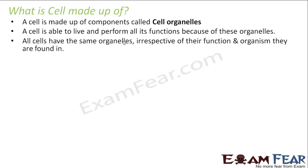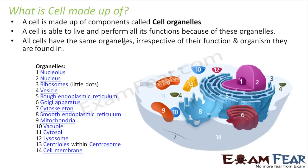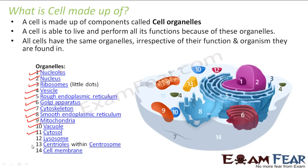In this lesson we will study in detail the structure of a cell and discuss all the cell organelles. The organelles present include: nucleolus, nucleus, ribosomes, vesicles, rough endoplasmic reticulum, Golgi apparatus, cytoskeleton, smooth endoplasmic reticulum, mitochondria, vacuole, cytosol, lysosomes, centrioles within the centrosome, and cell membrane. These are the various components of a cell.